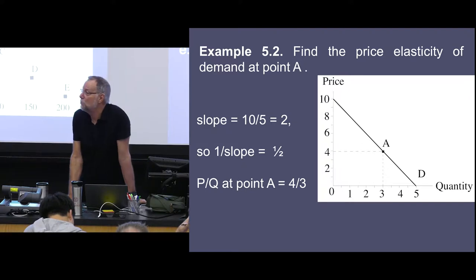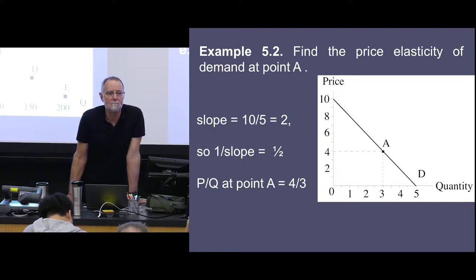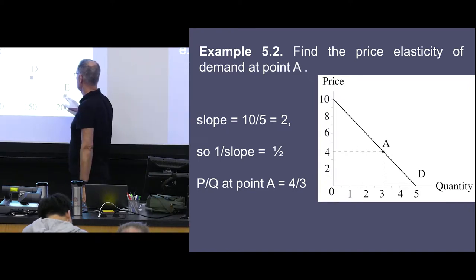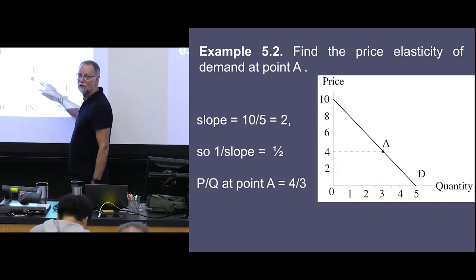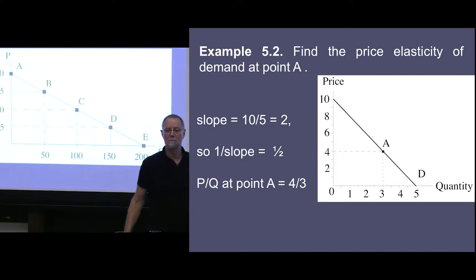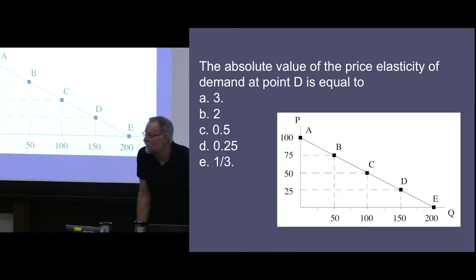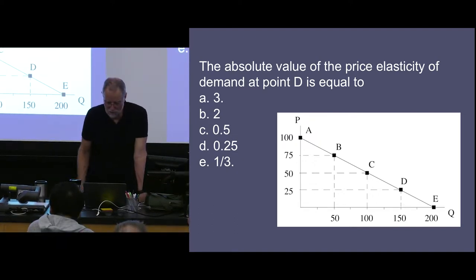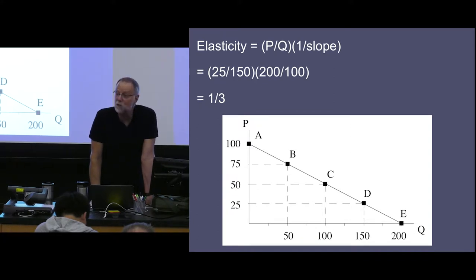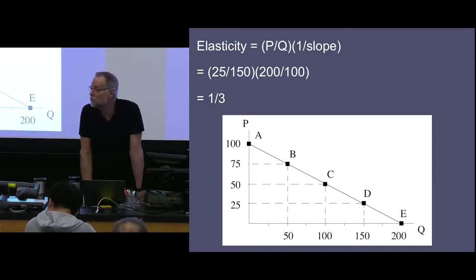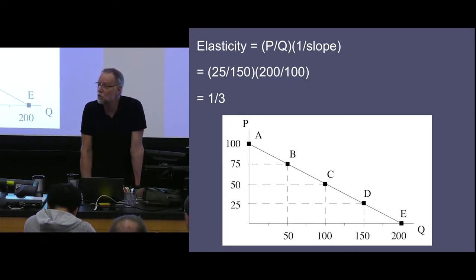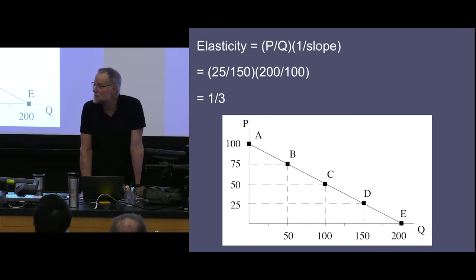What's the elasticity at point D? Using the segment-length formula, the elasticity equals that lower segment length divided by the upper segment length — a ratio of 1/3. Let's verify: slope = 100/200 = 1/2, so 1/slope = 2. The point has P/Q = 25/150 = 1/6. Two times 1/6 equals 1/3. It checks out.